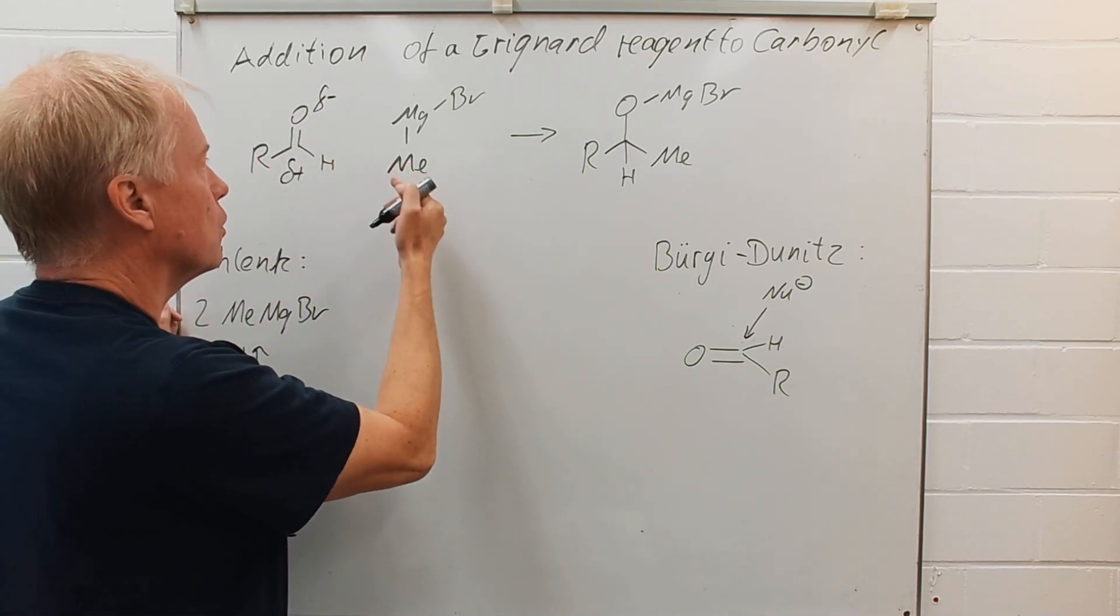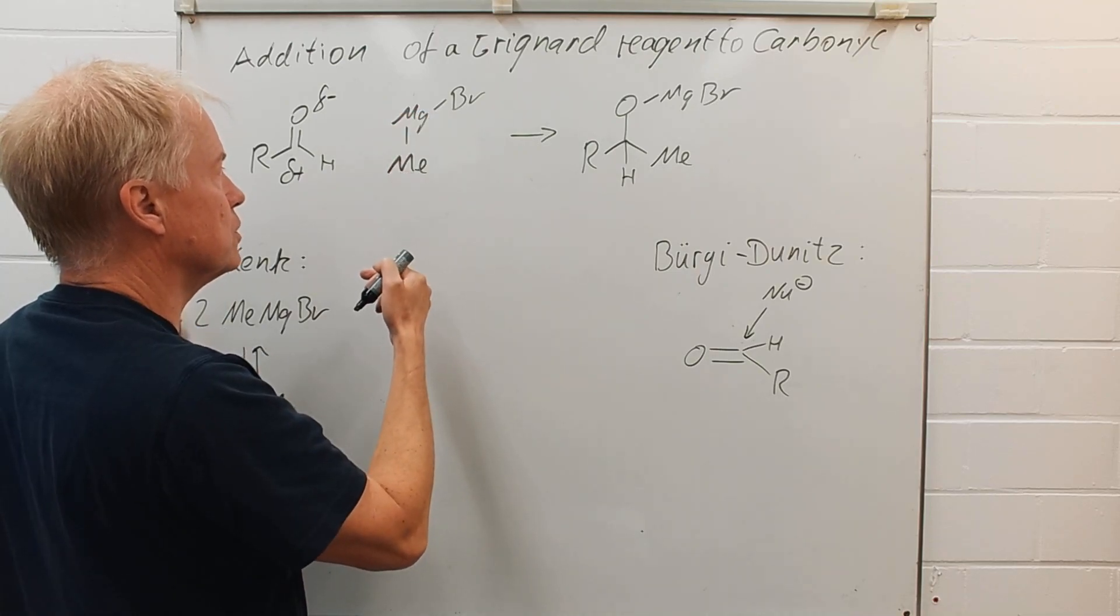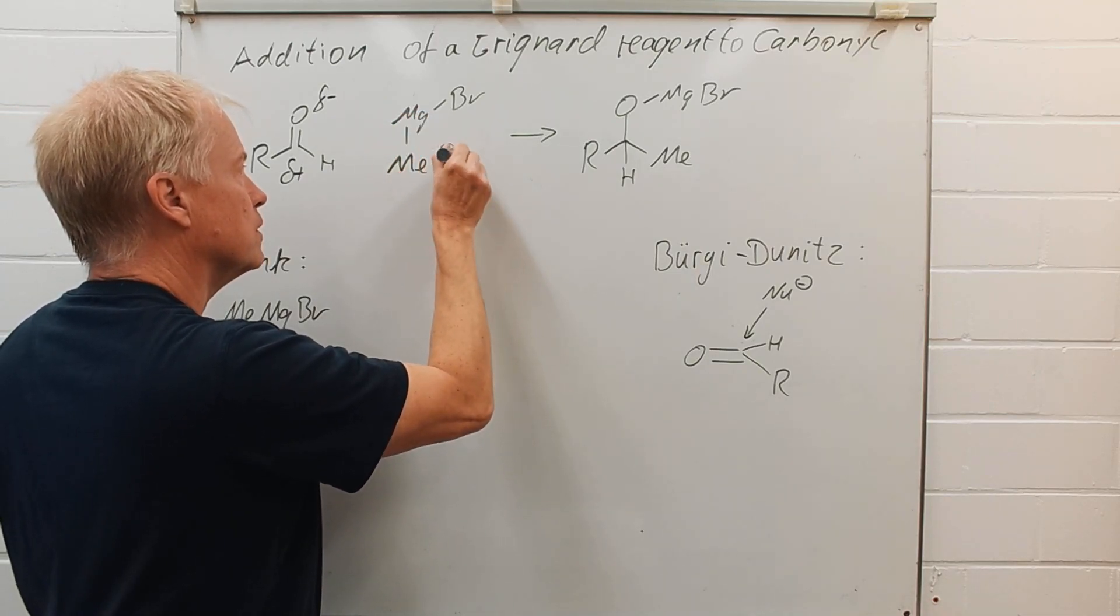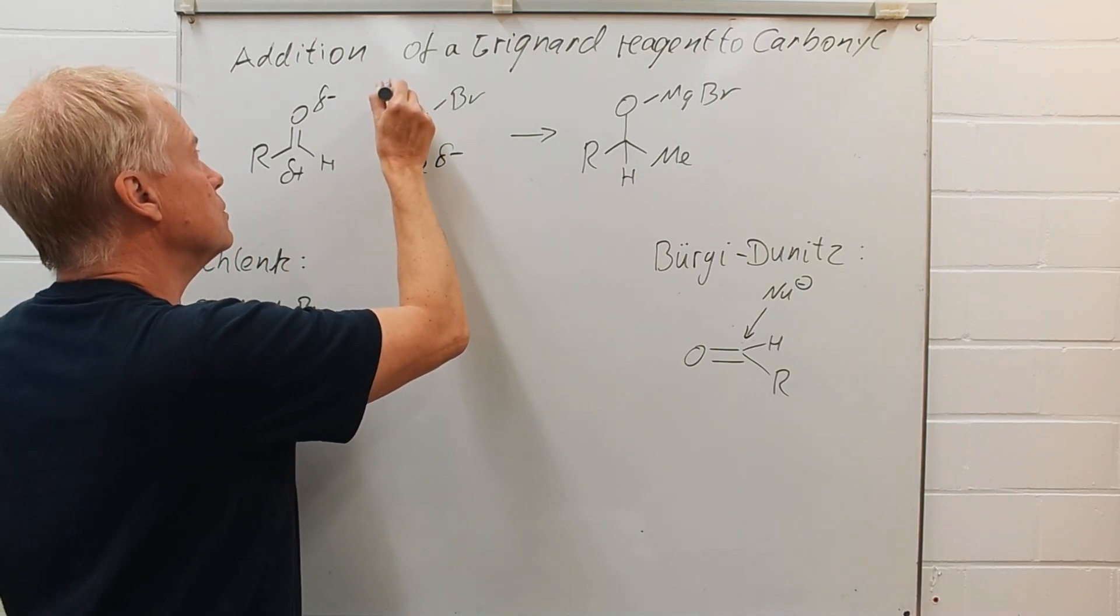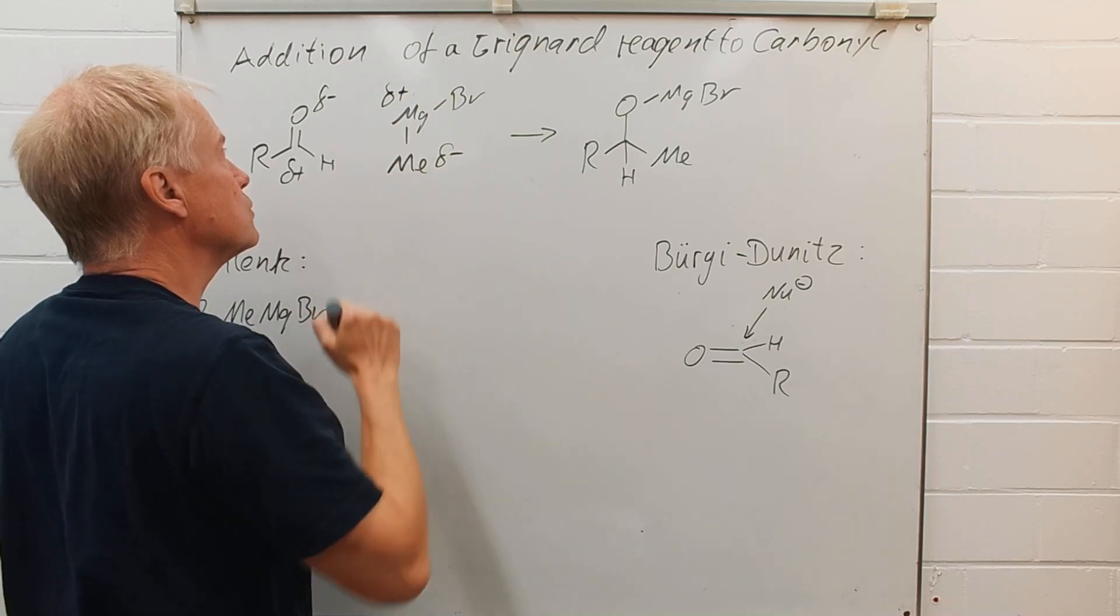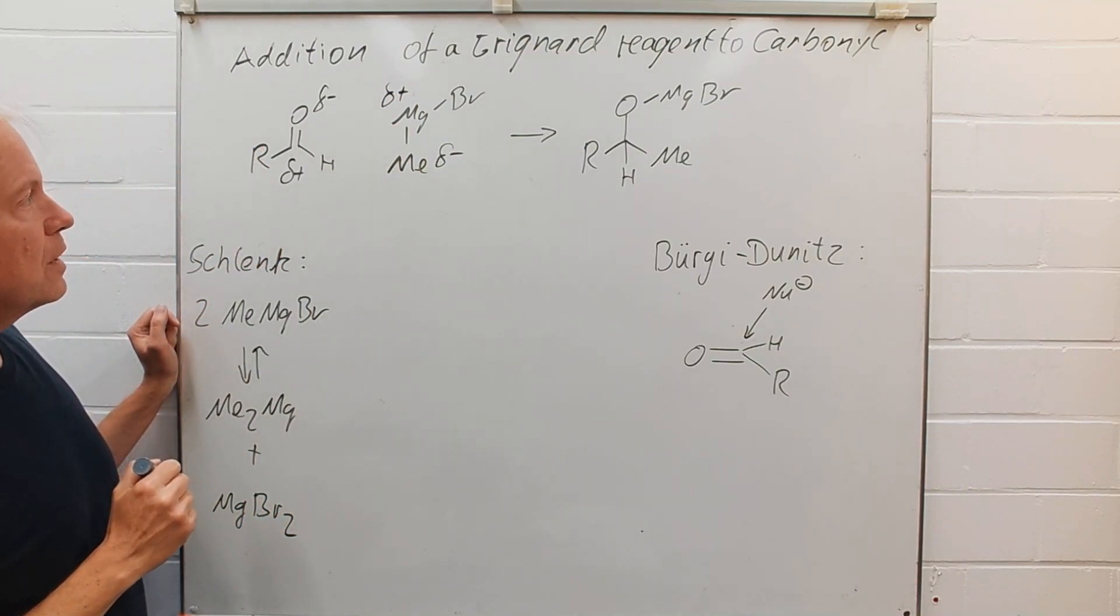Of course, in the Grignard reagent, the methyl group is negatively polarized and the magnesium is the positively polarized Lewis acid.